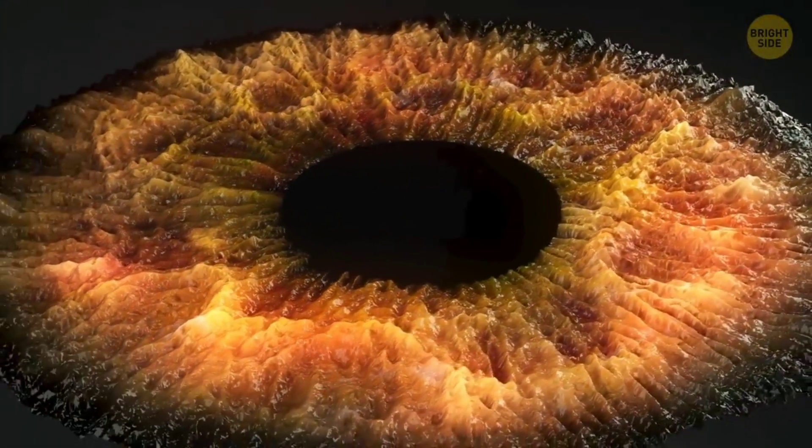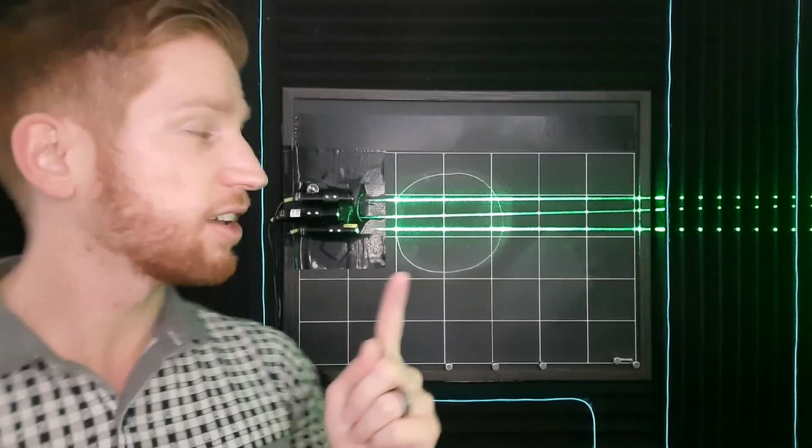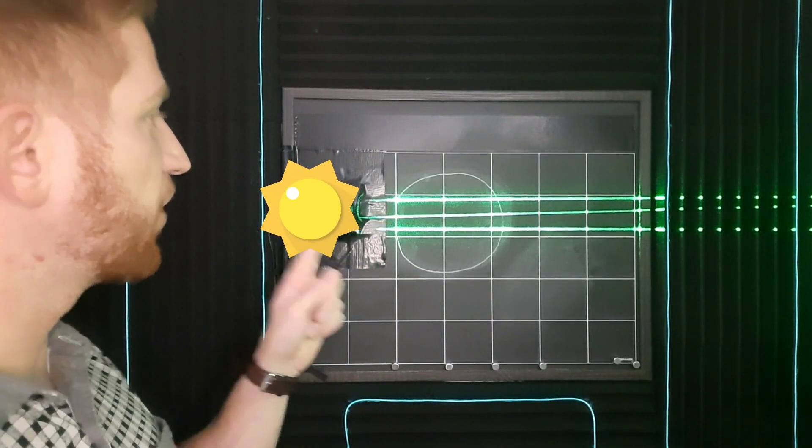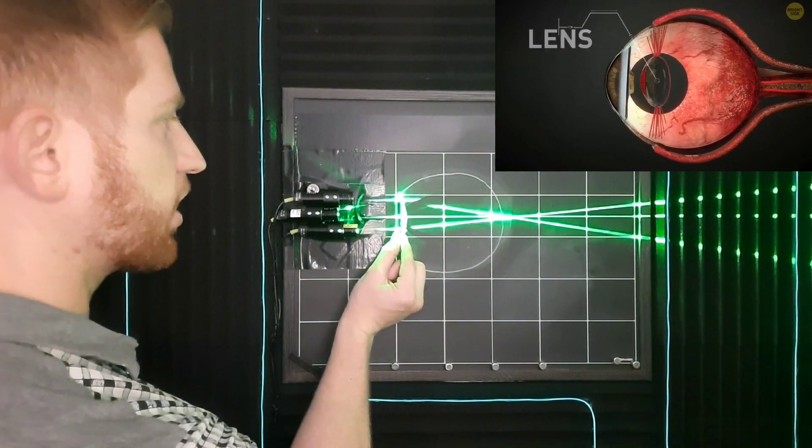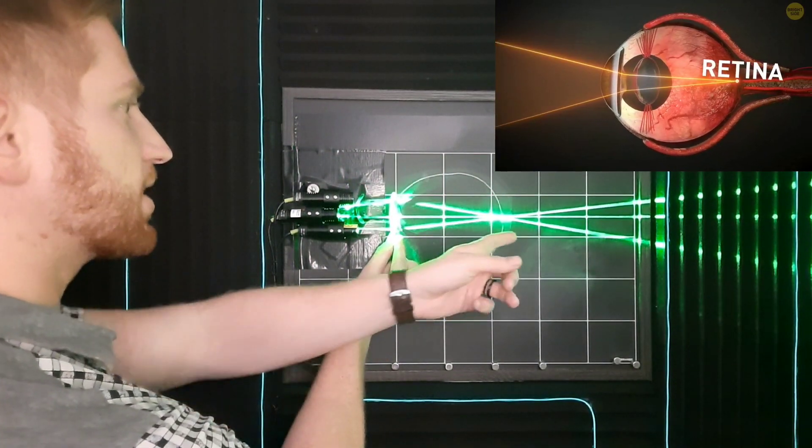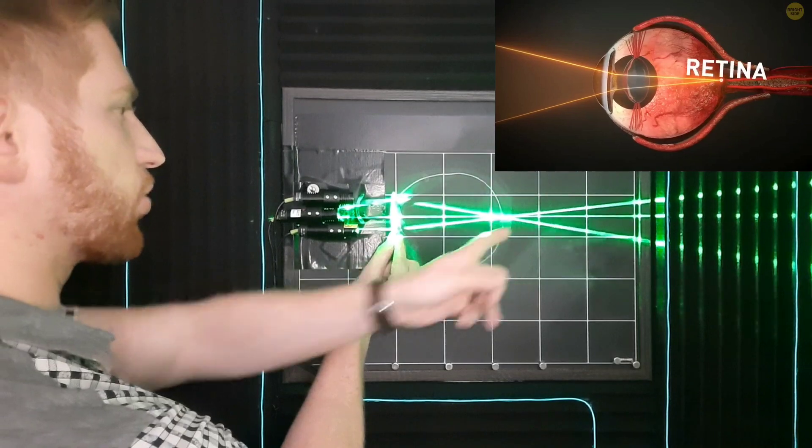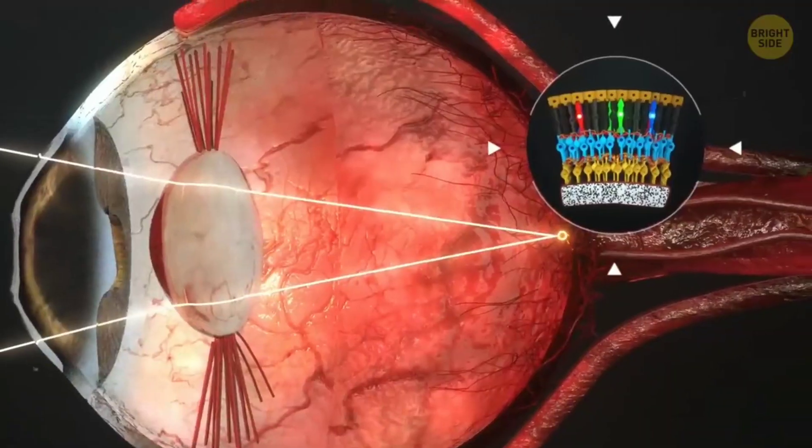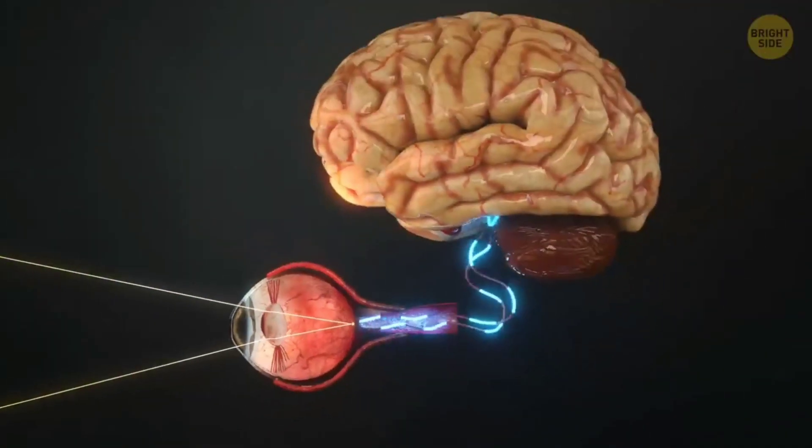First, you need to understand how a properly functioning eye works. Let's say that light is coming in from very far away. The cornea and lens in your eye takes that light and focuses it down onto a single point on your retina. That's where all of your photodetectors are that can actually make sense of an image.